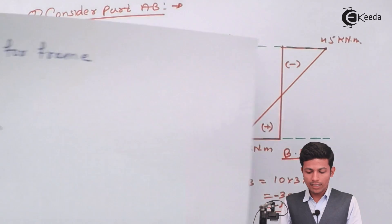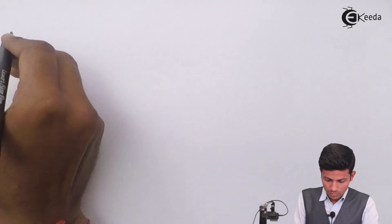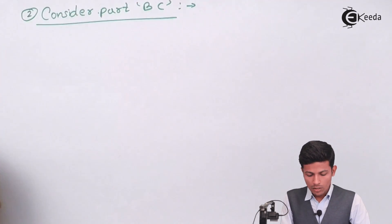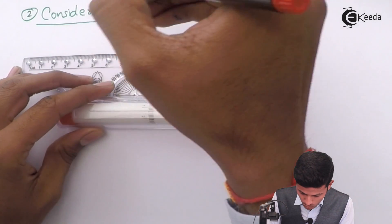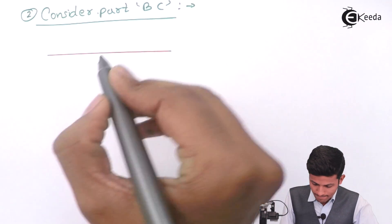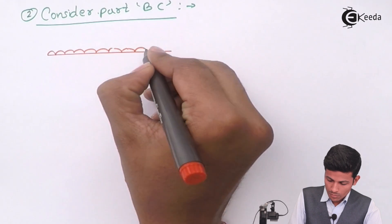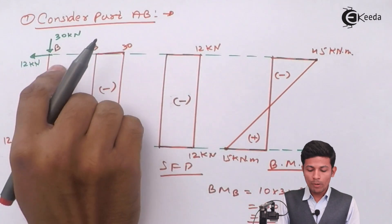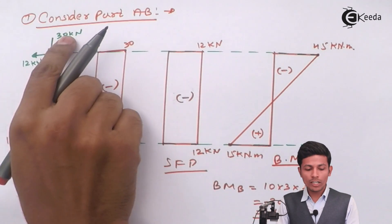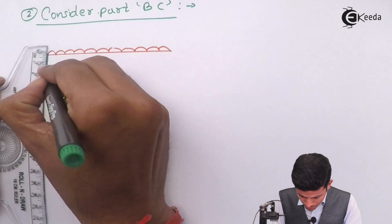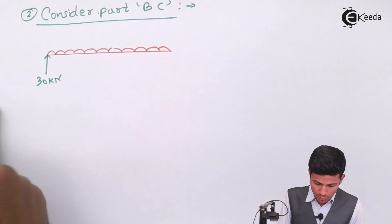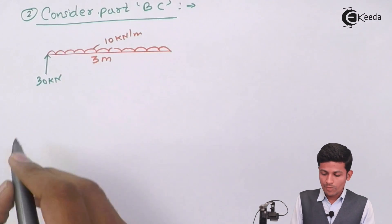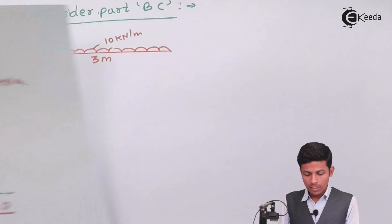Now let's look at the second part: member BC. Draw the free body diagram of member BC. The 30 kN from joint B acts downward; to balance point B in the second frame, 30 kN acts upward.